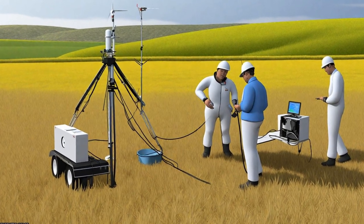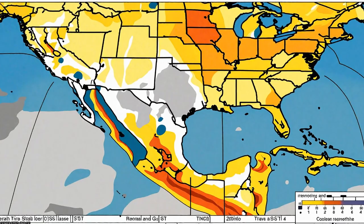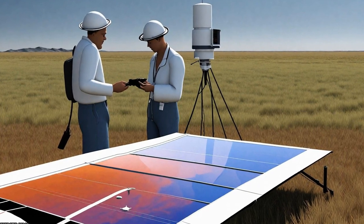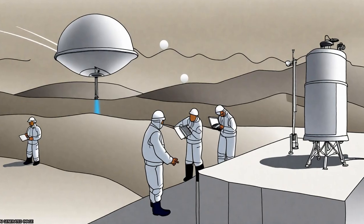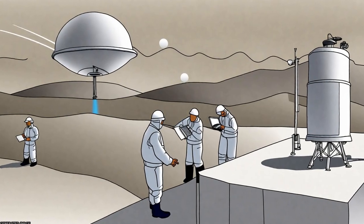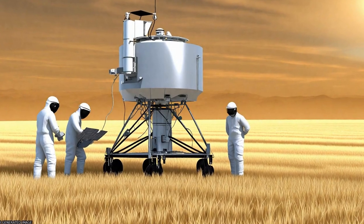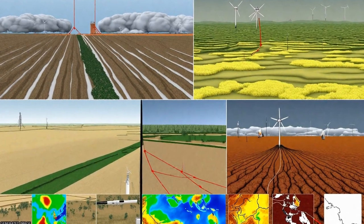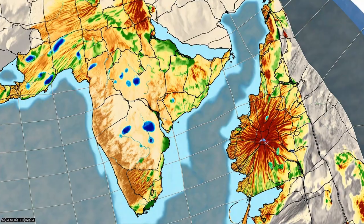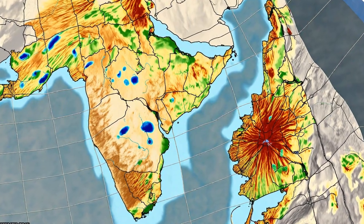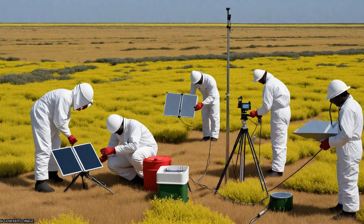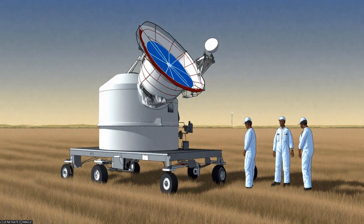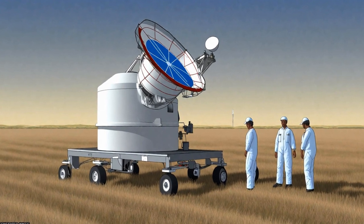The Atmosphere Land Exchange Inverse model is a multi-sensor TIR approach to ET mapping, coupling a two-source land surface model with an atmospheric boundary layer model in time differencing mode to map daily fluxes at continental scales in 5 to 10 kilometers resolution using thermal band imagery and insolation estimates from geostationary satellites.